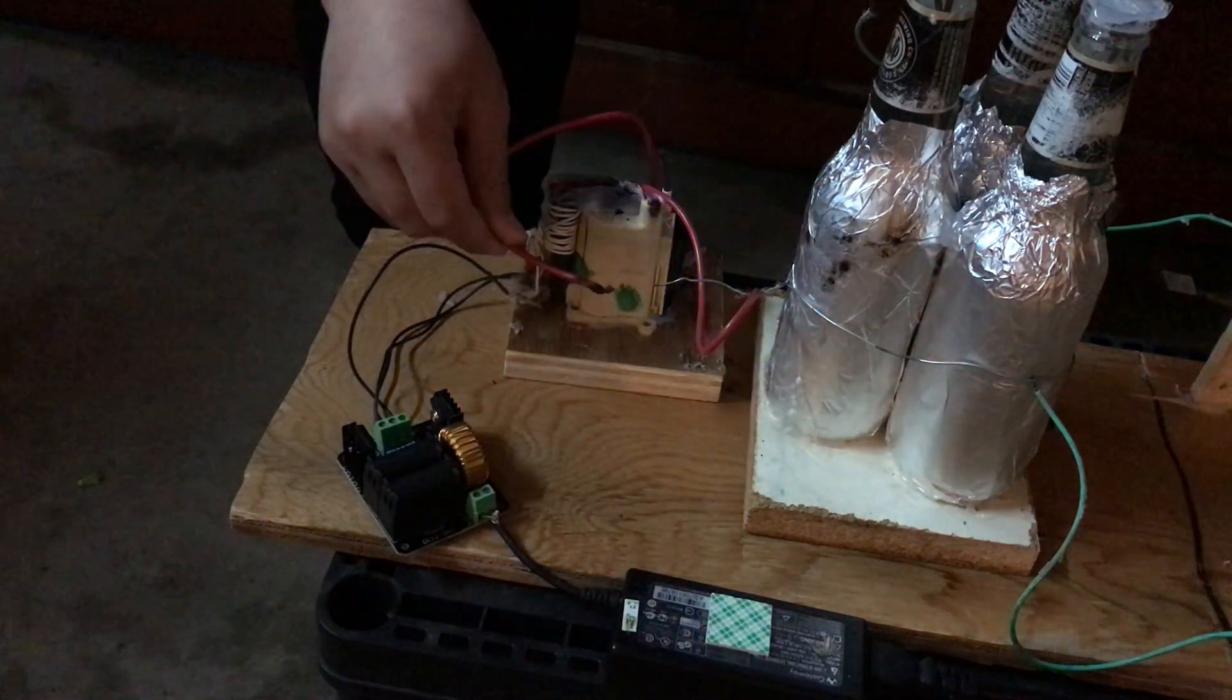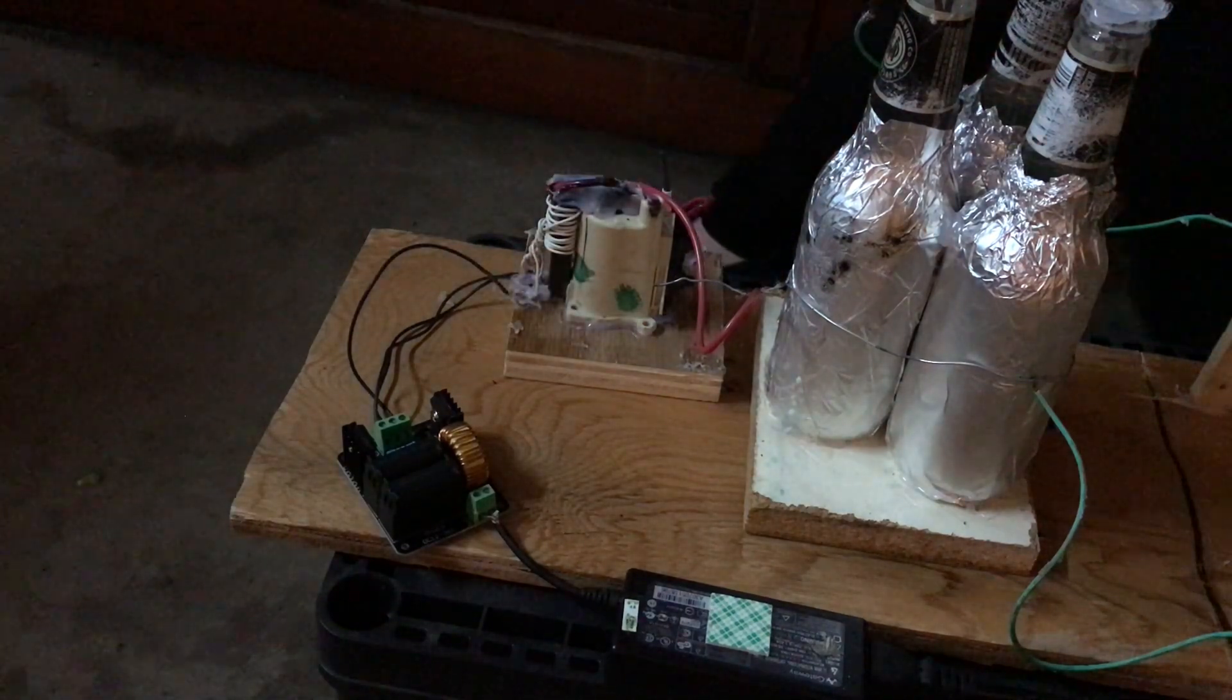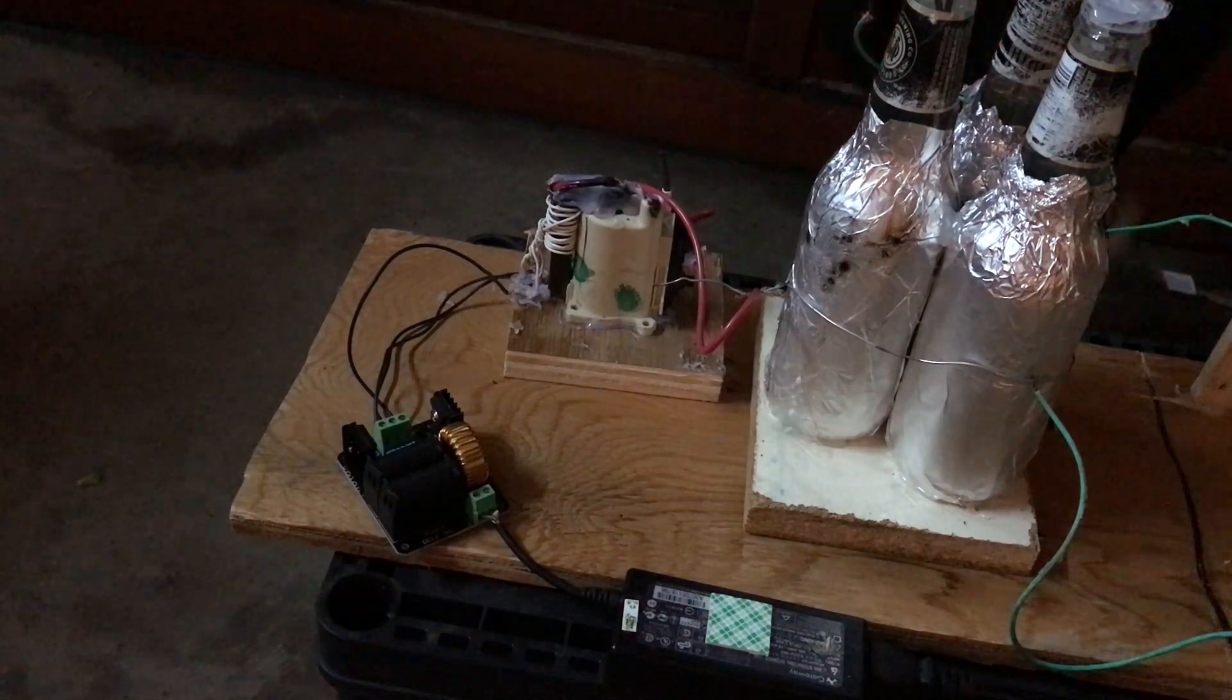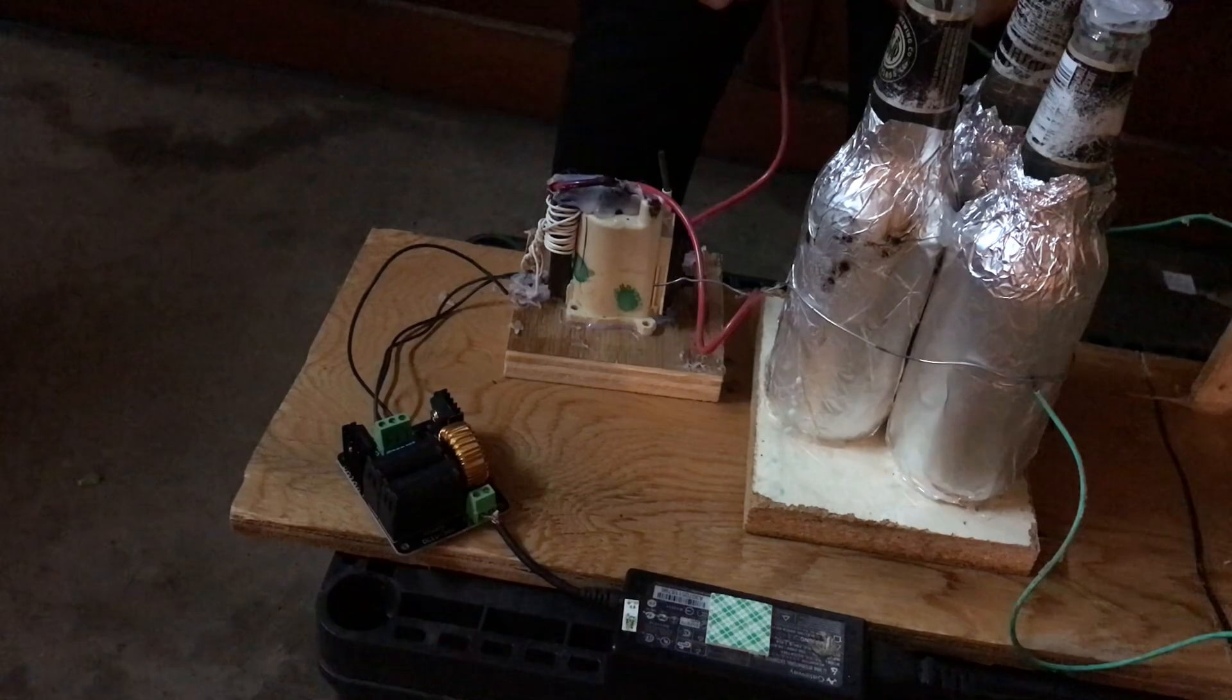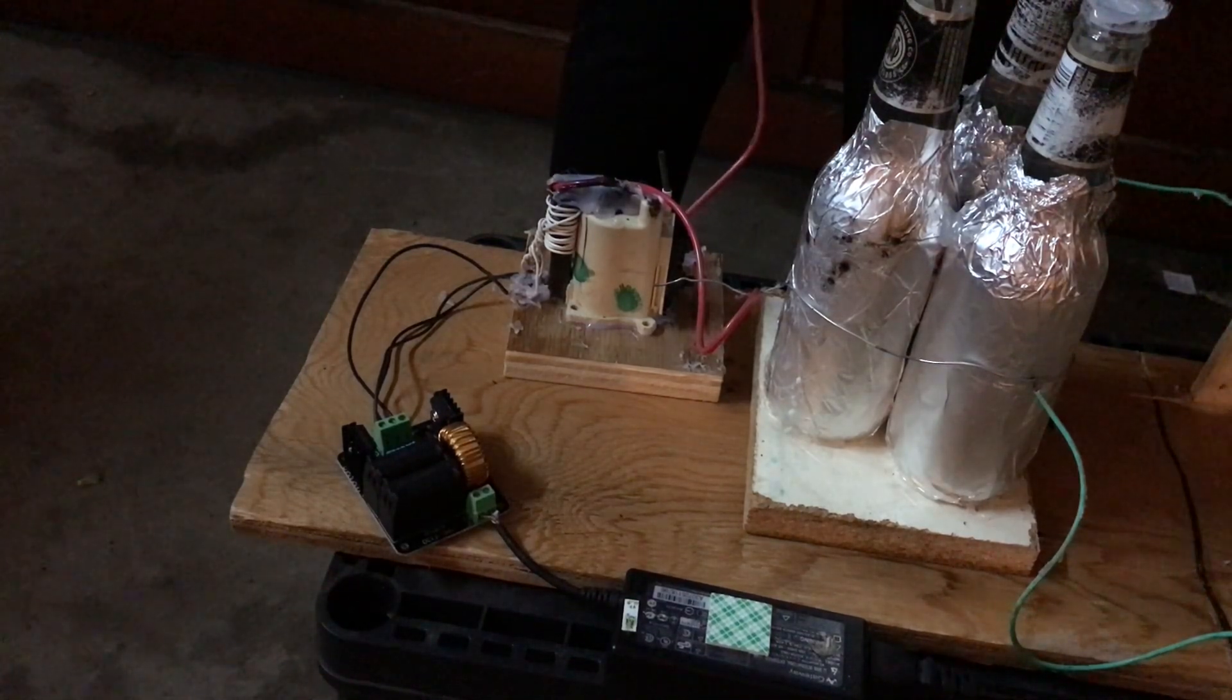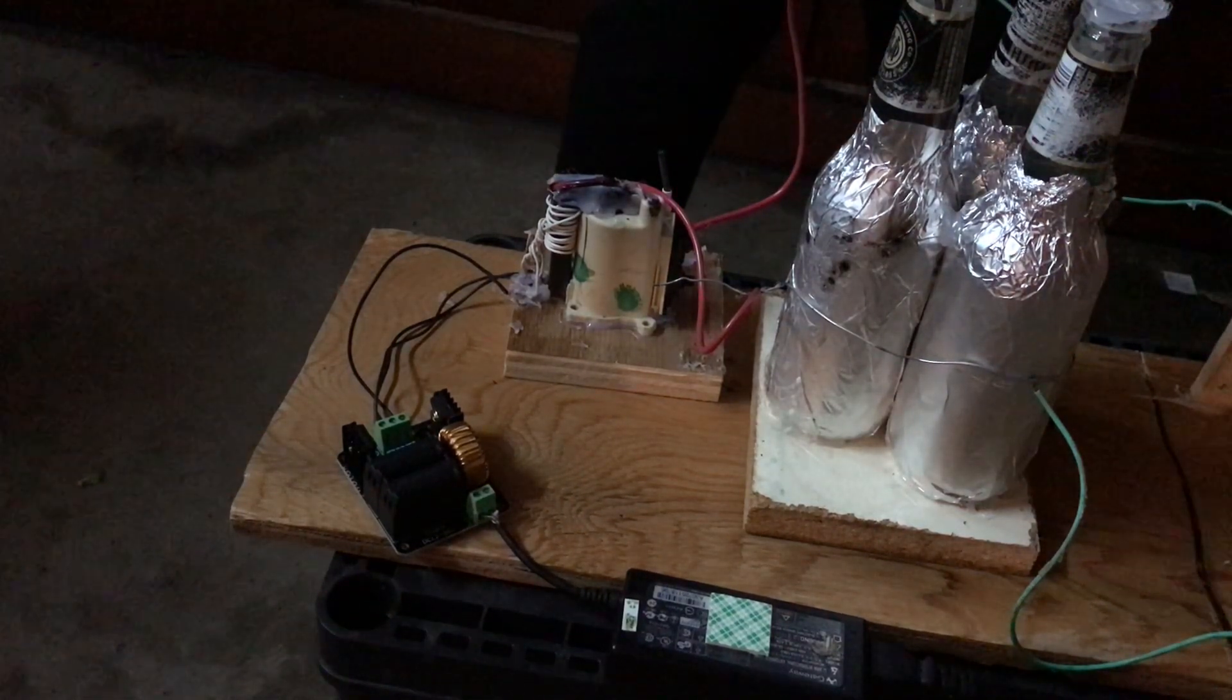You can see the arcs and then we can just charge the transformer. Then we hook it up to the capacitor bank which is in series with the spark gap.